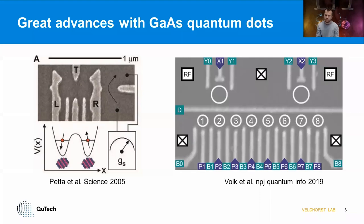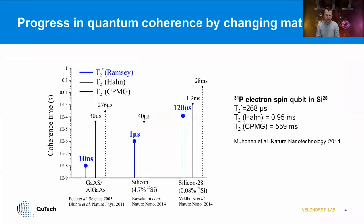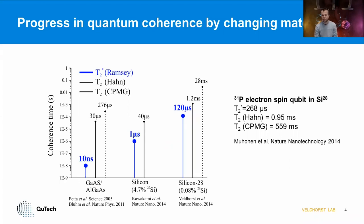Gallium arsenide is a good platform because it has enormously low disorder. At the same time, GaAs is a group III-V material with lots of hyperfine interactions that lead to quick decoherence. Despite the developments made with quantum dots, the limiting coherence warranted a search for other materials. By simply changing from GaAs to silicon, great progress has been made in quantum coherence time — using silicon-28, coherence times up to tens of milliseconds could be achieved.